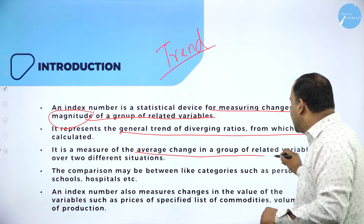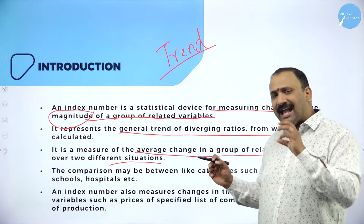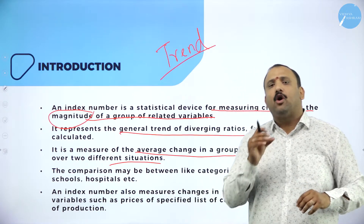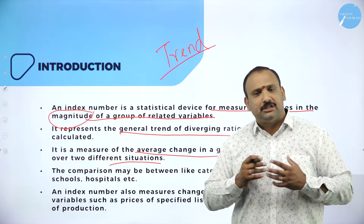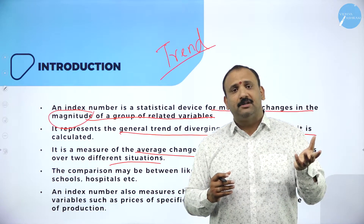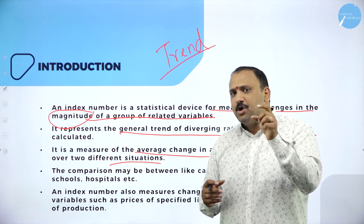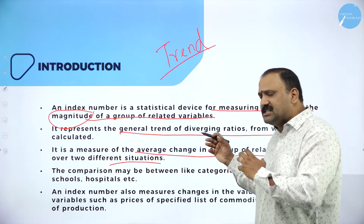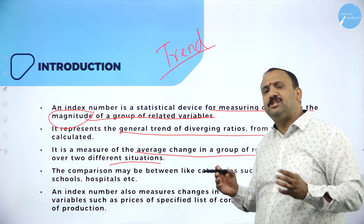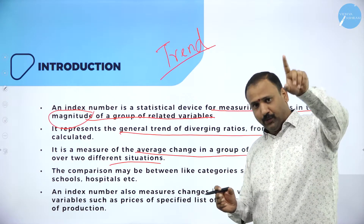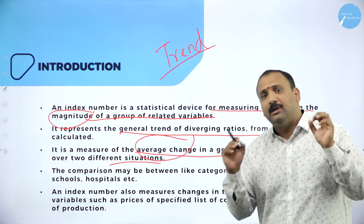Index number is also a measure of the average change in a group of related variables over different situations. When talking about the economy as a whole — for a country like India, which is so diversified — there are many factors that actually matter. But in studying economics, there are particular areas and instances where index number will be called for. You are going to measure the change in a group under different situations: today when you look into the market, the scenario is different; tomorrow there might be another instance altogether. So in the factor of measuring the average, index number will be a great help.